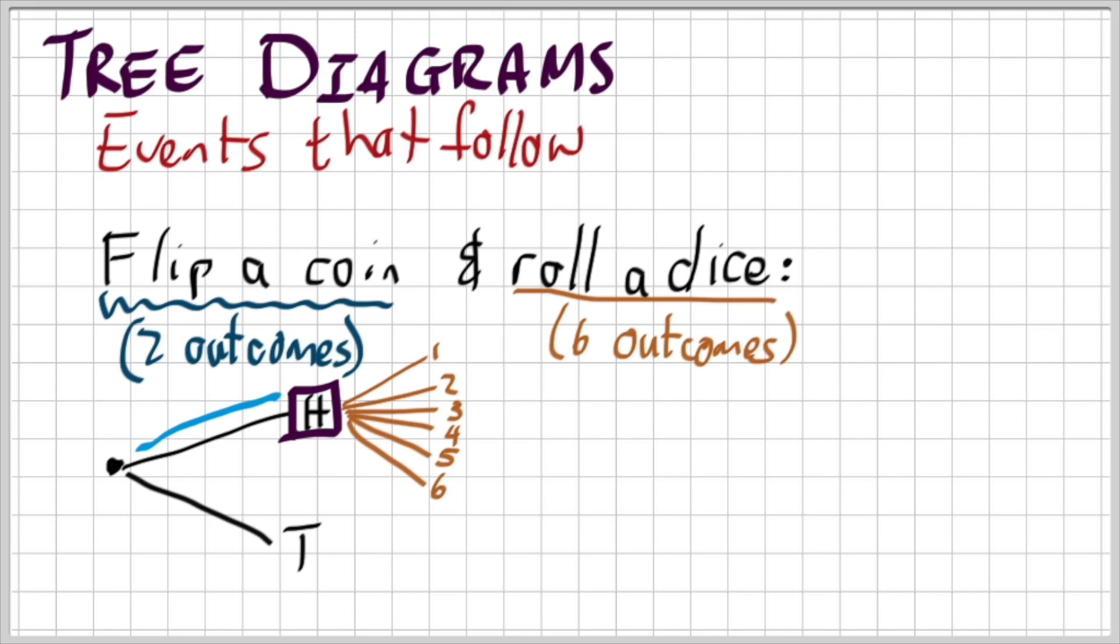Which means if I look at the two events combined I could have a heads and a one. Or I could have a heads and a two, a head and a three, a head and a four, a head and a five and a head and a six. That's literally walking the road. I like to put it so a head and a one or it could be a head and a two, a head and a three etc. But that's only if I land on a head first of all.